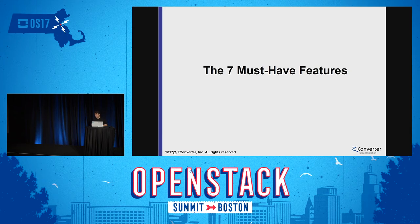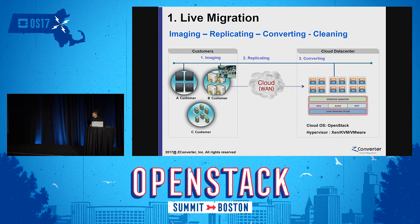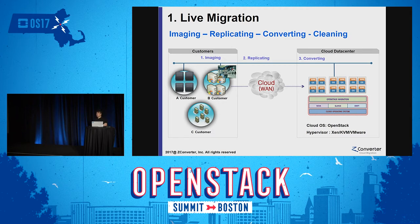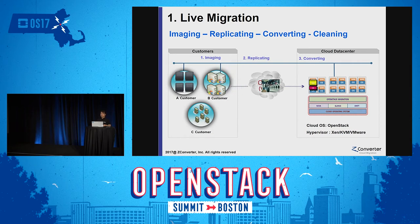Let's look at the seven must-have features. Number one is live migration. Live migration is the number one must-have feature for cloud migrations or cloud-based disaster recovery as a service. If you have to stop your production servers, big enterprise companies will not use cloud migration software or cloud-based disaster recovery services. Our process is very simple — during your cloud migration you can move on-premises workloads to any cloud like OpenStack without stopping your services.